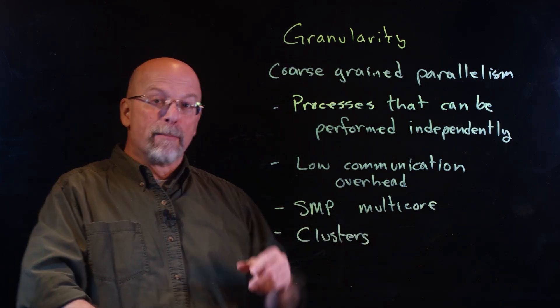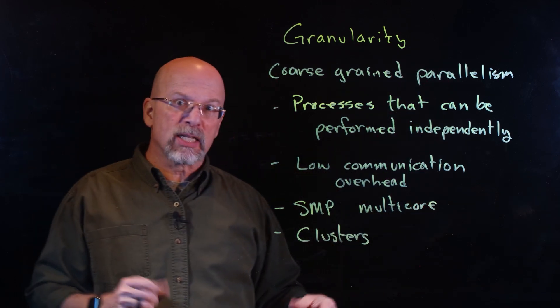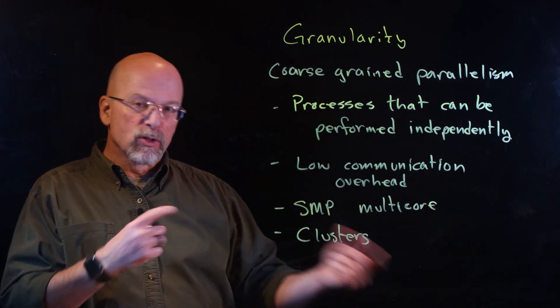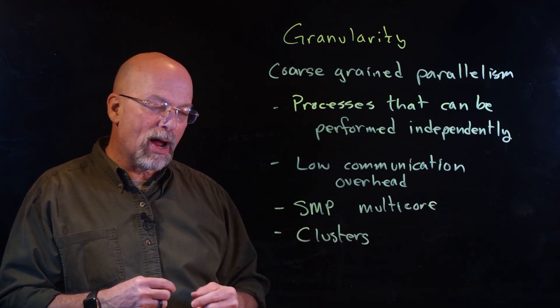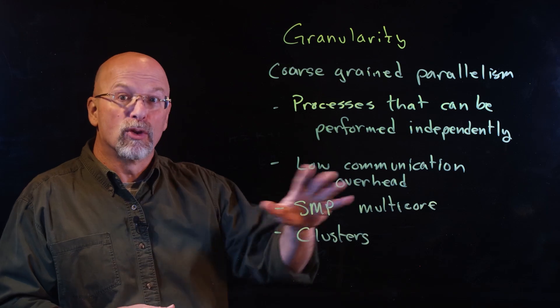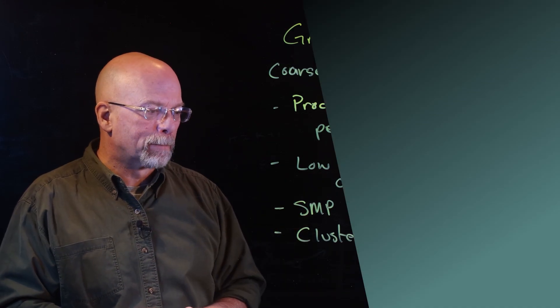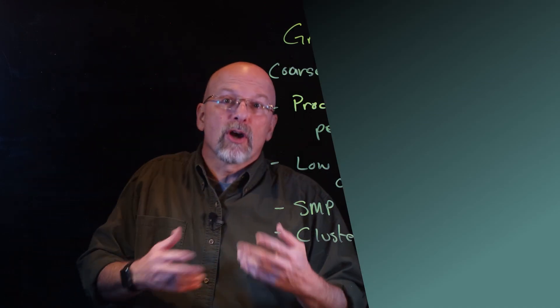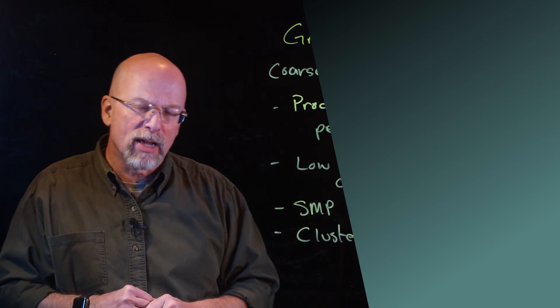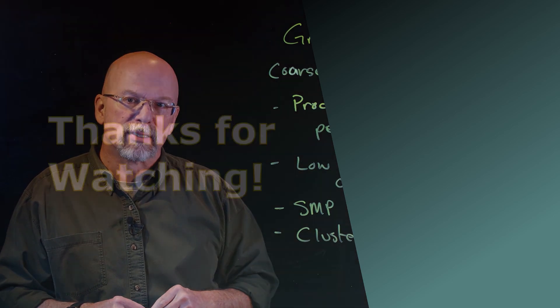You also have something called clusters, these groups of machines, multiple independent machines that are communicating typically across a network. Every one of those messages we have to pass between processes from one machine to another machine, that's a communication overhead. You want to avoid that as much as possible. From here, what we're going to do is we're going to start moving on to some of the consequences of trying to implement independent processes on multiple machines.